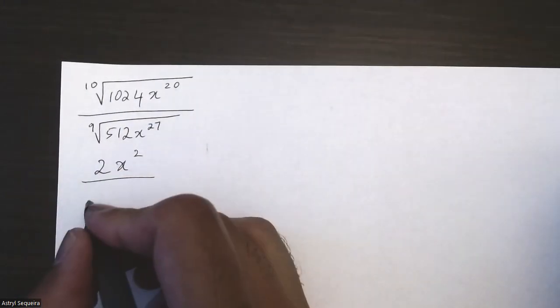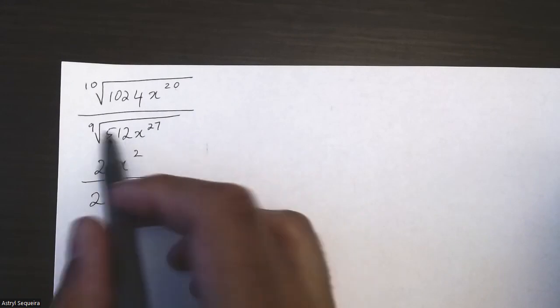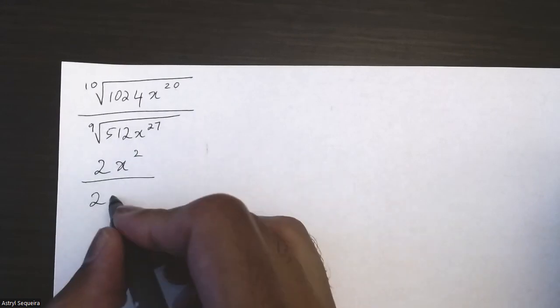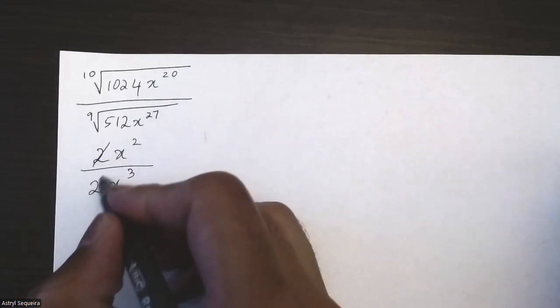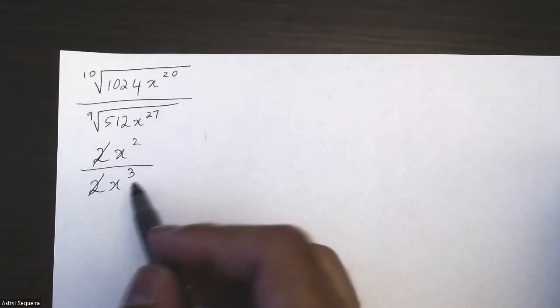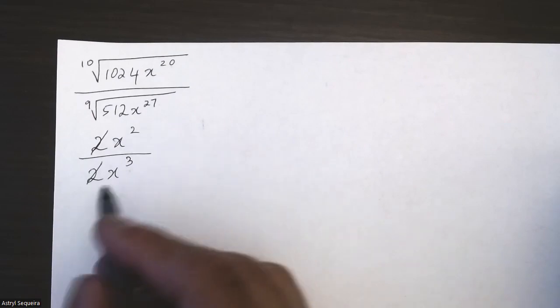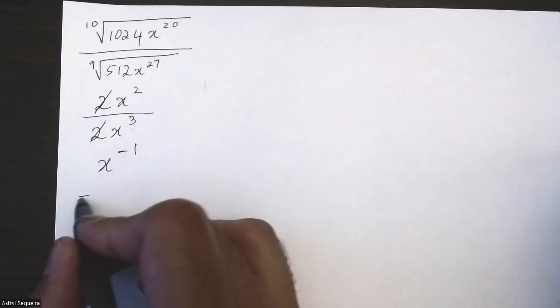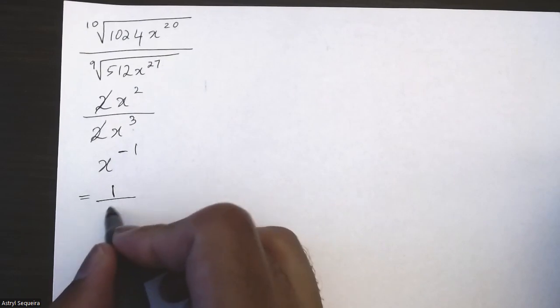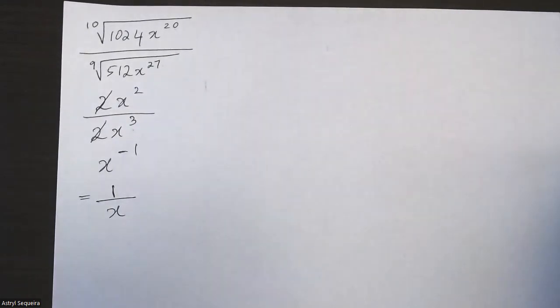And then 9th root of 512 is also 2, and 27 divided by 9 is just 3. So here these twos just cancel, and x squared—so 2 minus 3 is just x to negative 1—which means my final answer, if I make it as a positive exponent, is just 1 over x.